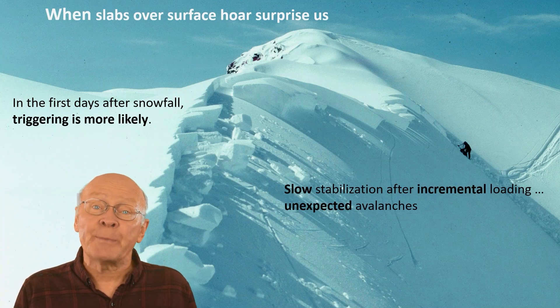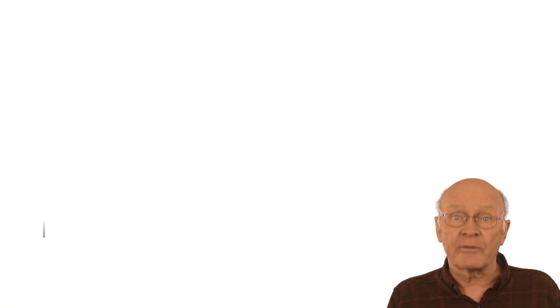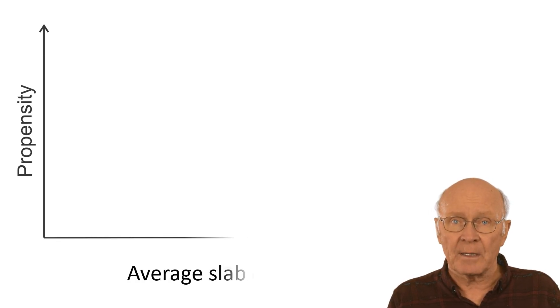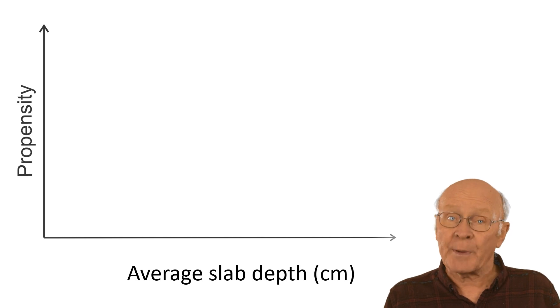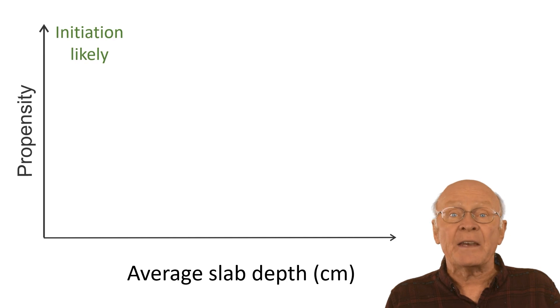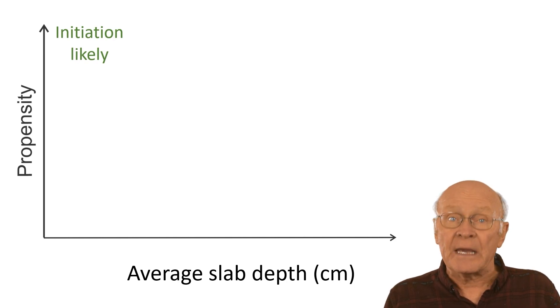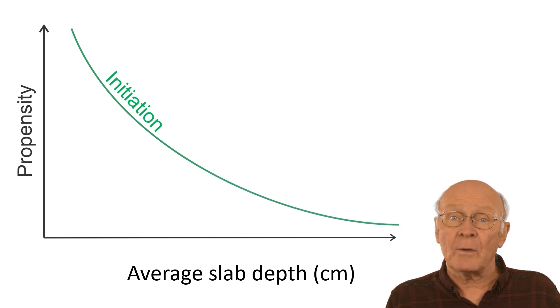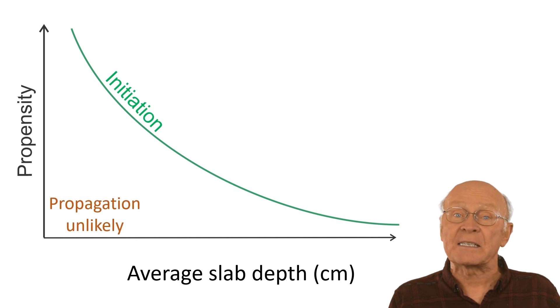This has resulted in experienced people triggering unexpected avalanches during and soon after periods with incremental loading. Let's look at how the propensity of crack initiation and crack propagation change over time as a surface hoar layer gets buried more deeply. When the overlying snow first becomes cohesive, it's easy to start a crack in the surface hoar under a shallow slab. Then, as the layer is buried more deeply, it gets harder to initiate a crack. Initially, when the slab is shallow and soft, cracks in the surface hoar layer are less likely to propagate. As the slab gets deeper and harder, propagation becomes more likely.